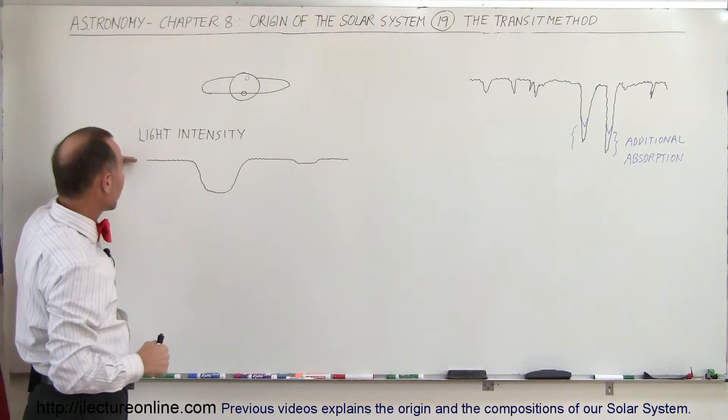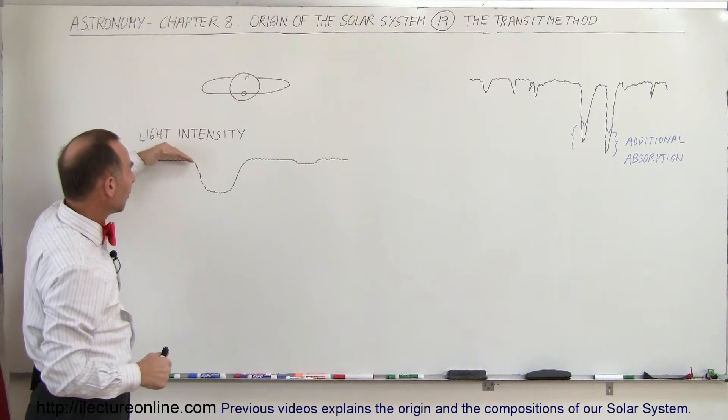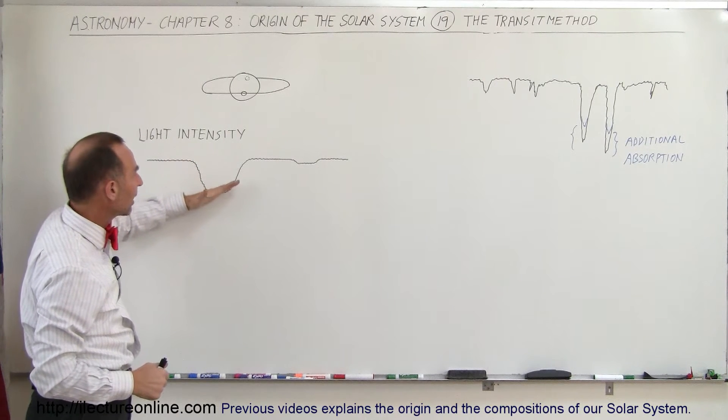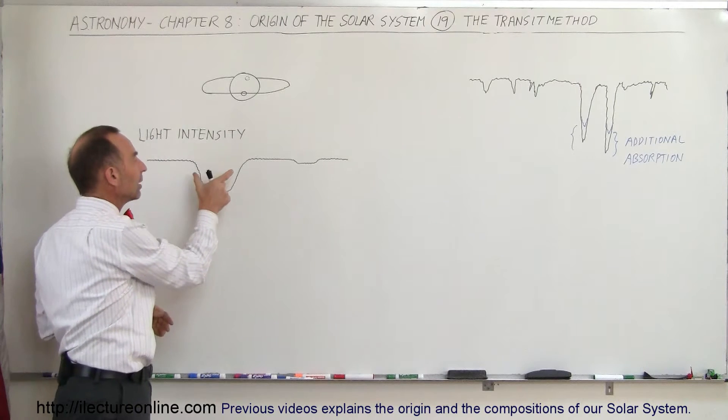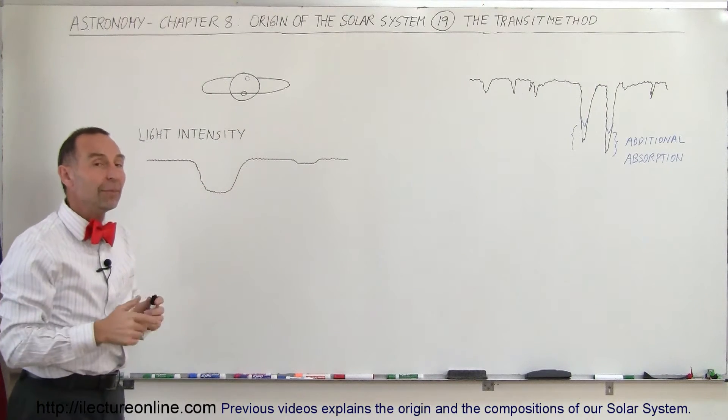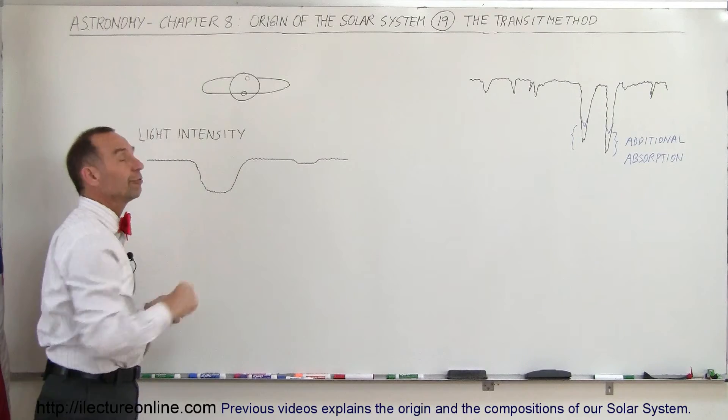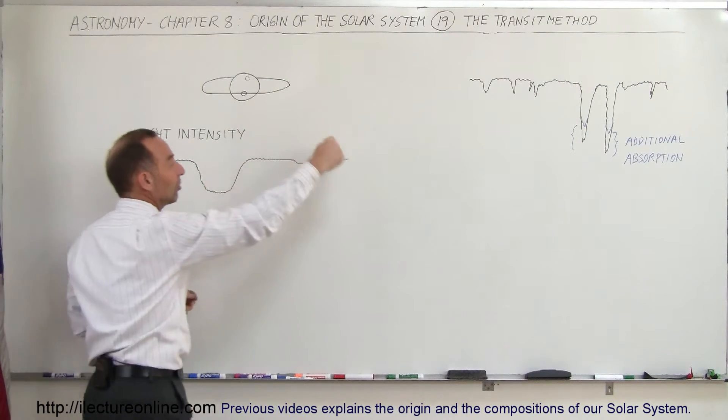So when the normal intensity is about at this level and then we see the level drop, stay and then go back up, and we can calculate the duration of time, we can surmise that must have been a planet moving in front. And of course that happens on a regular basis.